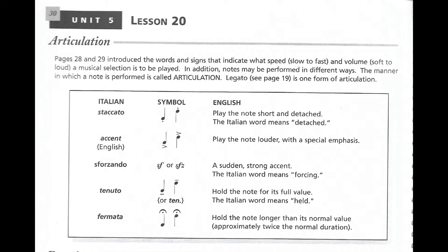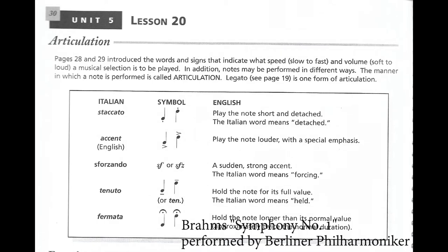Tenuto — those little lines above and below the note means that you hold the note for its full value. The Italian word means held. And a fermata — my piano teacher used to call those a bird's eye because they look like little bird's eyes. They mean that we hold the note longer than its normal value, approximately twice the normal duration.